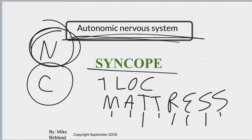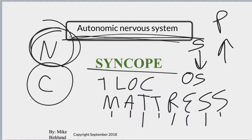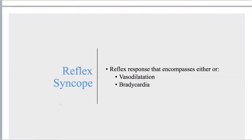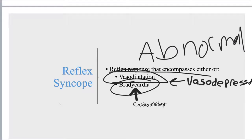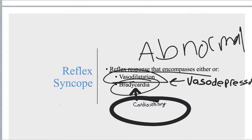With autonomic nervous system syncope, a decrease in the sympathetic nervous system is called orthostatic syncope, and an increase in the parasympathetic nervous system is called reflex syncope. Reflex syncope is defined as an abnormal reflex response that causes either vasodilation or bradycardia. If it causes vasodilation or inhibits vasoconstriction, that is called vasodepressor. If there is a decrease in heart rate, or the heart rate is prevented from increasing when it normally should, that is called cardioinhibitory.